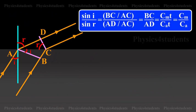Sin i by sin r is equal to BC by AC divided by AD by AC, is equal to BC by AD, is equal to Cmt by Cat, that is equal to Cm by Ca.